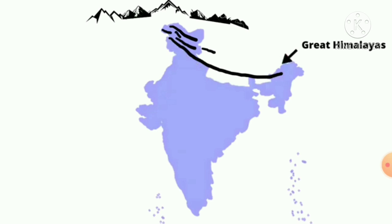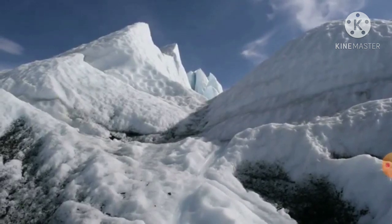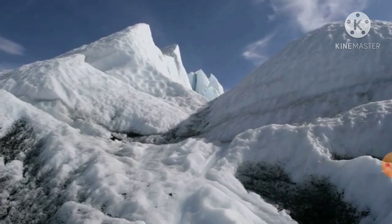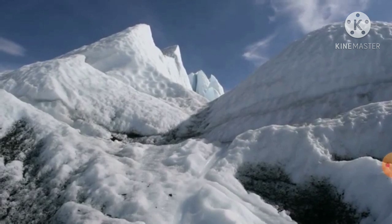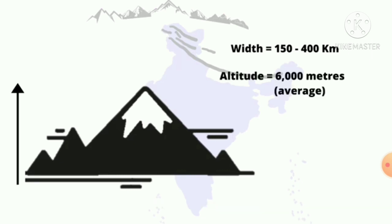The first range is continuous and we have the Greater Himalayas, also called Himadri. The top of the mountain — Mount Everest and other mountains — this whole mountain region is covered by snow. It contains perennial rivers. The average width is 400 to 800 km and its elevation from mean sea level is about 6,000 meters. It is very high.